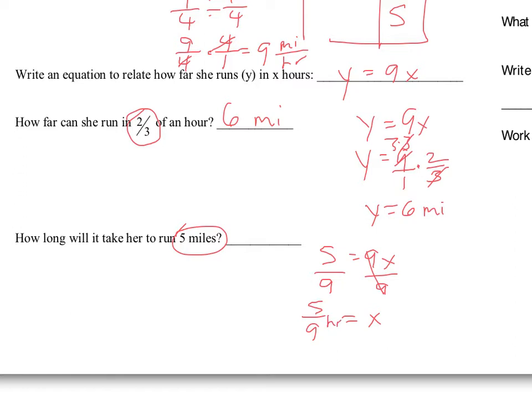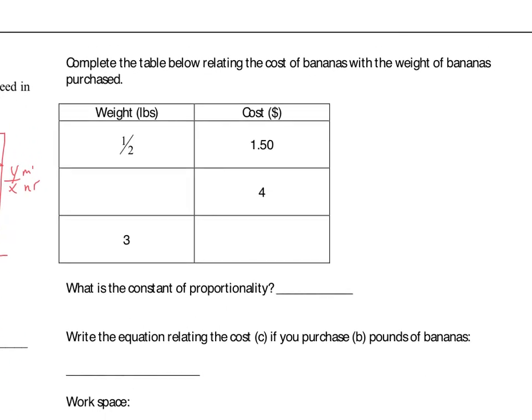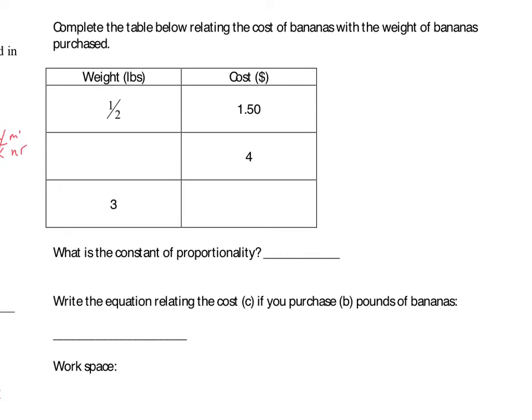We could do some work to figure out more specifically what five-ninths is in terms of an hour, but I'm happy with that fraction. Coming over here — this is really the meat of what we're working on today. It says to complete the table relating the cost of bananas with the weight of bananas being purchased.